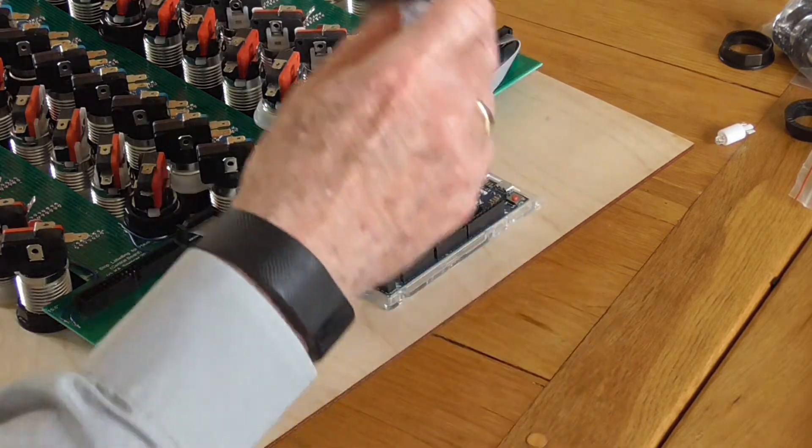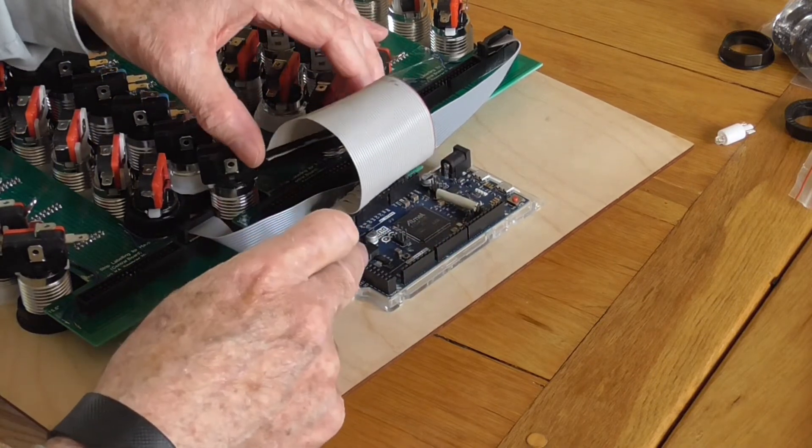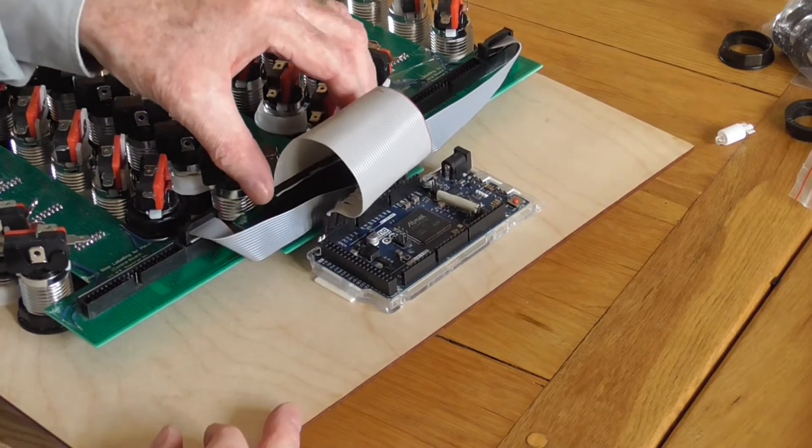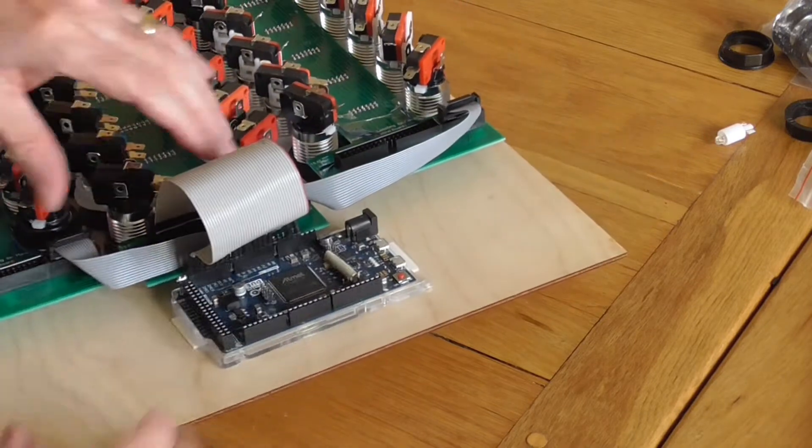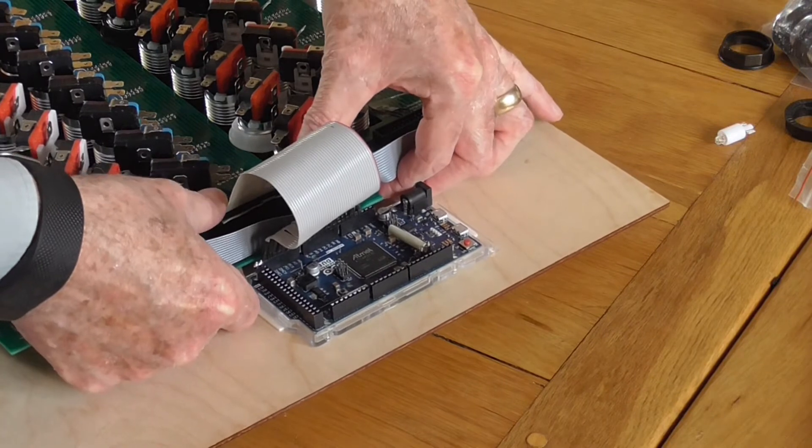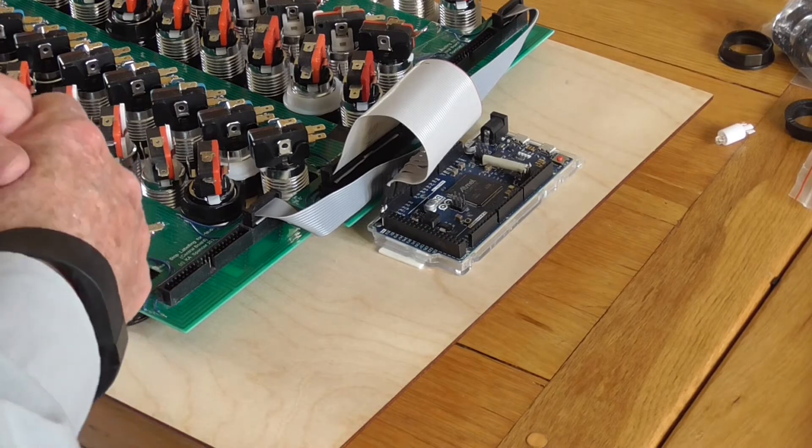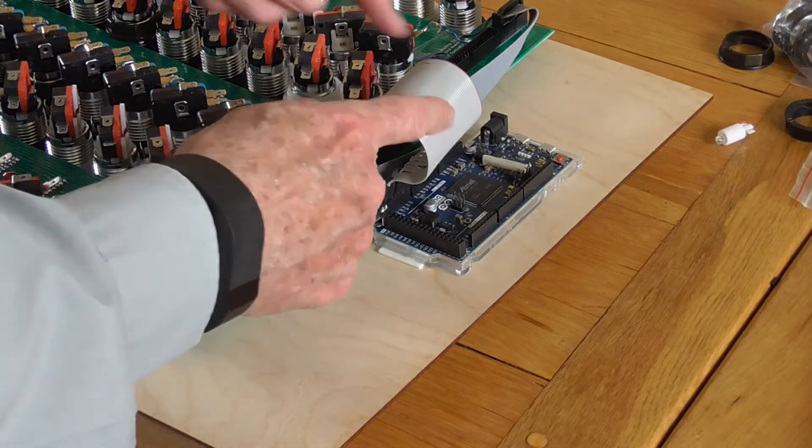What we can then do is we can take that central PCB cable that is plugged into the Arduino Due and we can plug that into the central PCB's socket. And I'm about to do that now. There it is, it's in, okay.